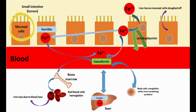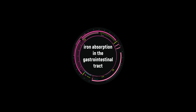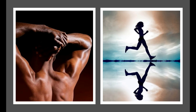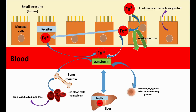Iron from the diet is first absorbed into the intestinal mucosal cells, then transported from the mucosal cells to the rest of the body depending on needs. Our bodies are highly adaptive, absorbing more iron when iron stores are low and less when iron storage is higher. After intake, iron from the diet is first absorbed into the intestinal mucosal cells.